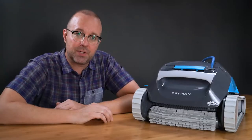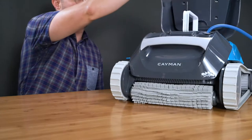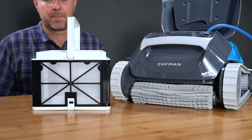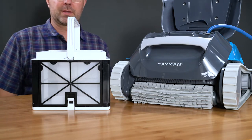Speaking of filtration options, the Cayman comes with a fine filter basket. It's spacious enough to hold large debris like leaves and small twigs found in your average pool, as well as fine enough to clear up mildly cloudy water.